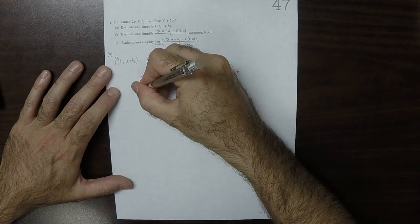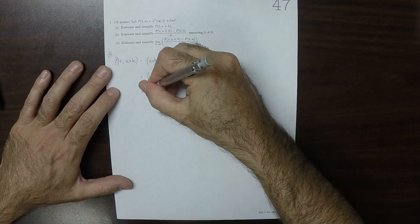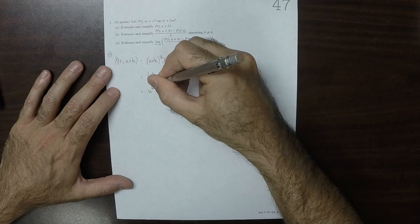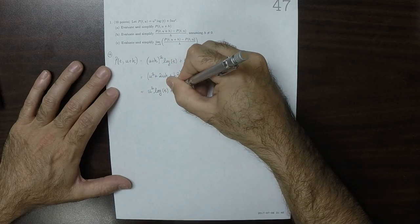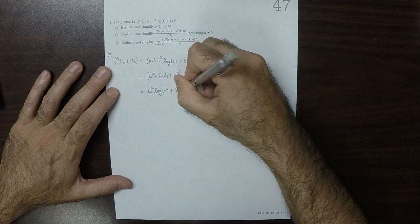And then multiplying that all out, that is u squared log t plus 2uh